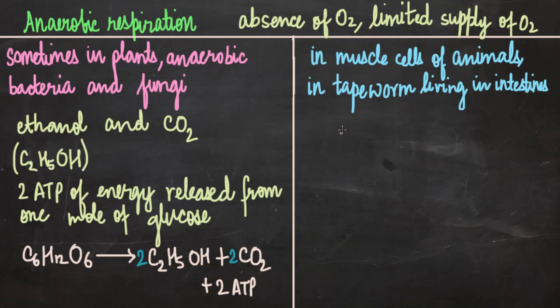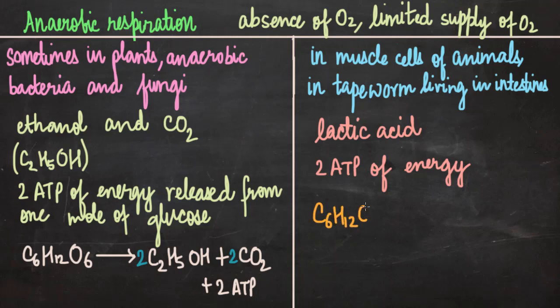So the products here are different now. Here we are going to get products like lactic acid and there is no evolution of CO2, carbon dioxide. We have lactic acid along with energy. So here as well 2 ATP of energy is released from 1 mole of glucose molecules. So let's write the reaction. Lactic acid is a complex molecule, so we are not going to write its actual formula. We will just write it like this. So we have glucose and we don't have any oxygen. This glucose gives lactic acid plus 2 ATP.